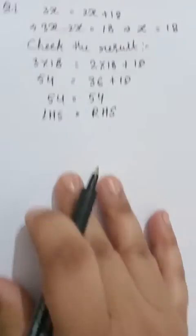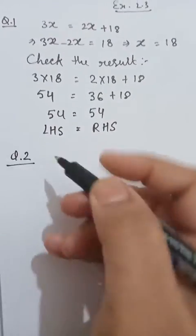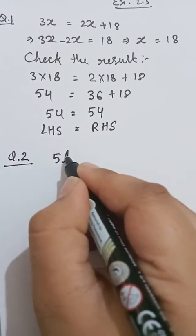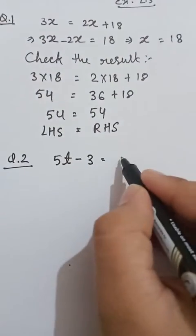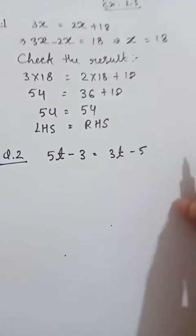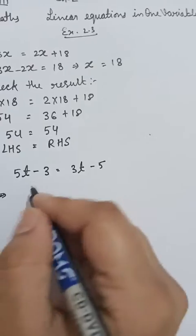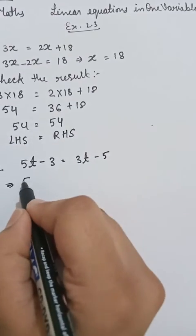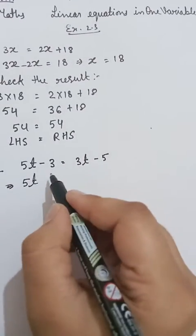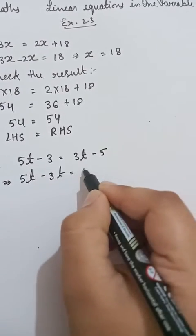The answer is correct. Now question number 2: 5t minus 3 is equal to 3t minus 5. Let's solve it. We take the variable terms to one side: we have 5t on one side and 3t on the other.